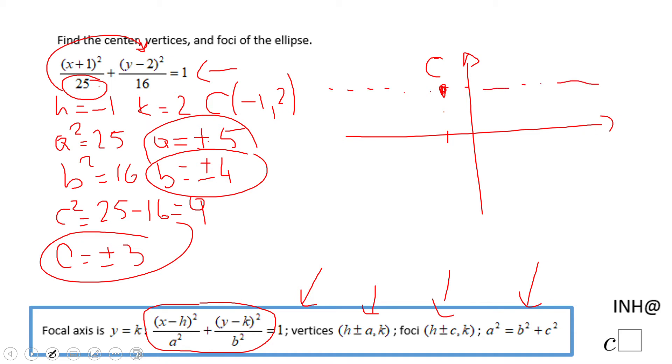On this major axis I'm going to need to move five left and right from the center because a is plus and minus five. So from this center of negative one and two, five left that will be somewhere here.